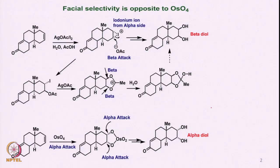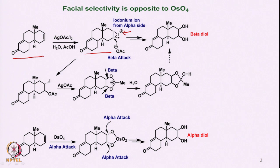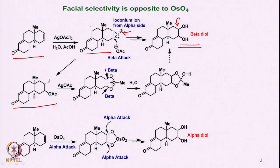For example, when we take a substrate like this, the iodonium ion formed is from the alpha side. This iodonium ion then gets attacked by the acetate ion from the beta side, forming an intermediate. Since the methyl group is beta-oriented, you get attack of the acetate from the beta side, giving an alpha-iodo and beta-acetoxy intermediate.